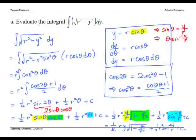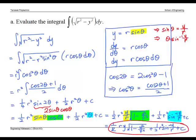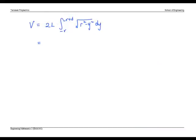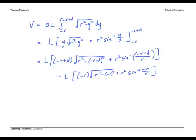We can now evaluate V using part A. From part A, the integral of square root r squared minus y squared is this. Substituting endpoints we get the final result.